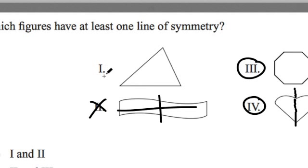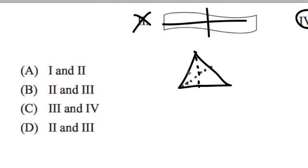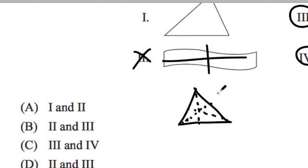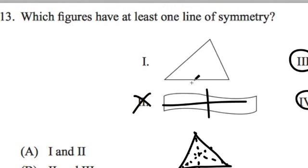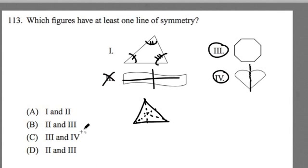Number one is kind of hard, because if it was an equilateral triangle there are three different ways you can fold it — an equilateral triangle has three lines of symmetry. But this one doesn't look like an equilateral triangle. Looking at it more closely, it looks like all three angles are different, so this one has no lines of symmetry. The answer is the octagon and the heart are the ones that have at least one line of symmetry.